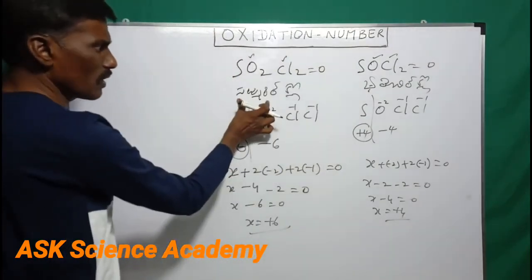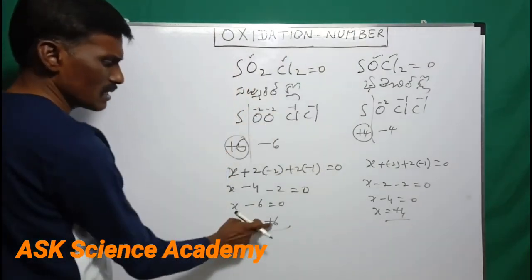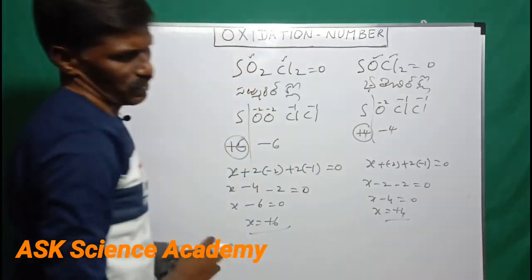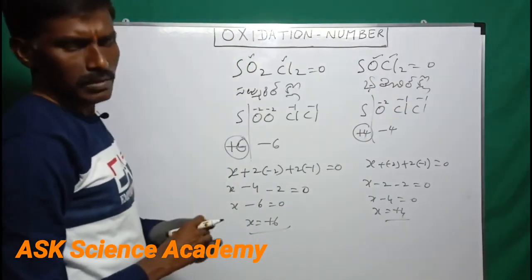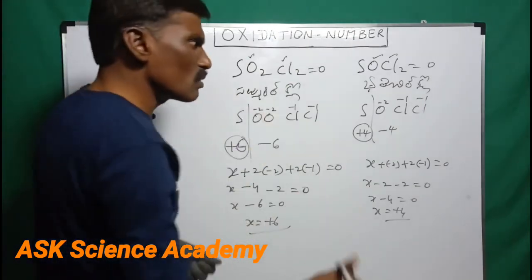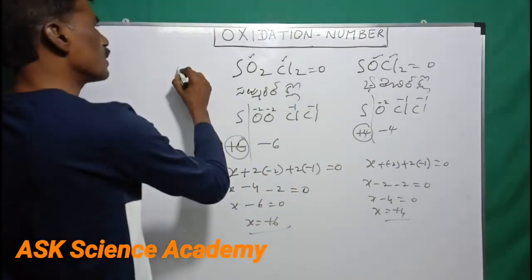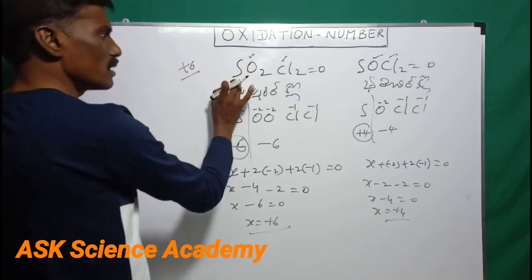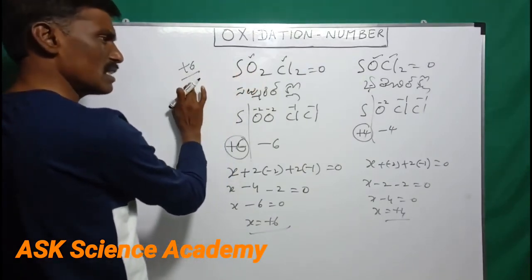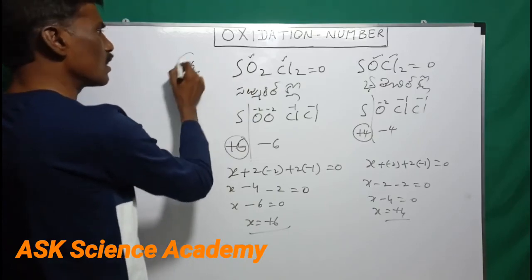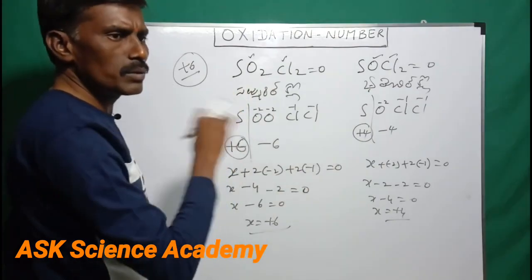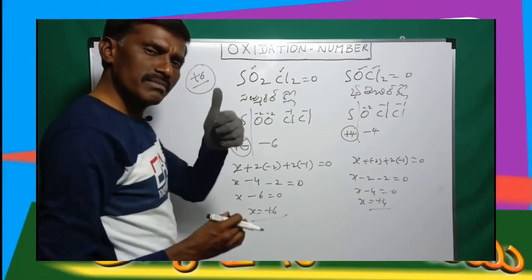Sulfuryl chloride, sulfur oxidation state is plus 6. Sulfur oxidation state is plus 4. This is the two molecules of oxidation state. The concept is that the group number is plus 6 and the group number is higher oxidation state. Ok then I am at the end. Thank you.